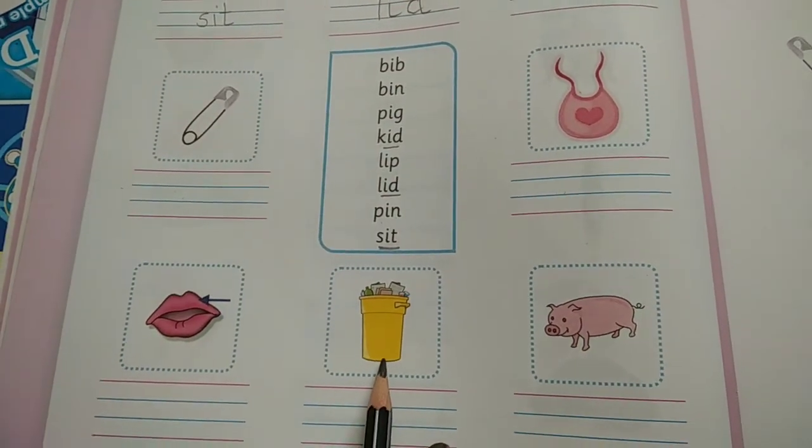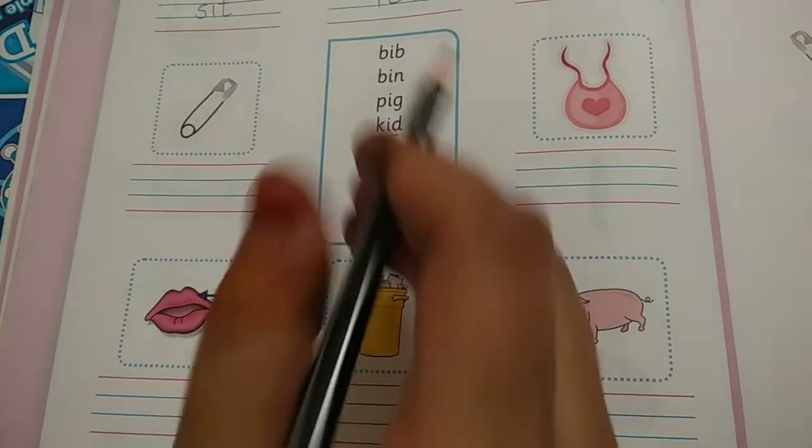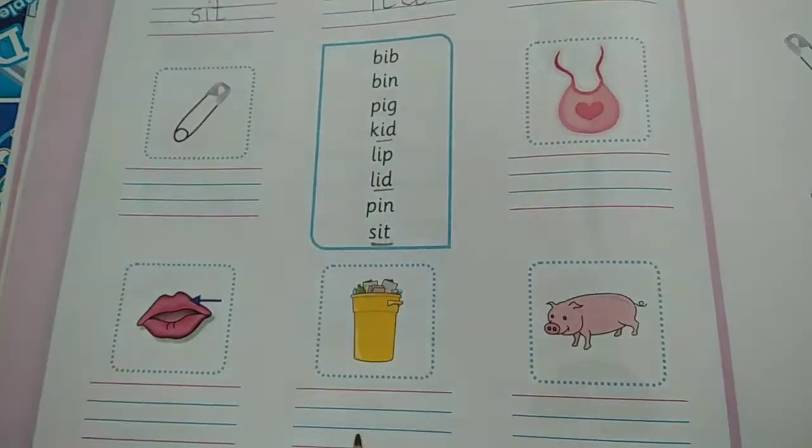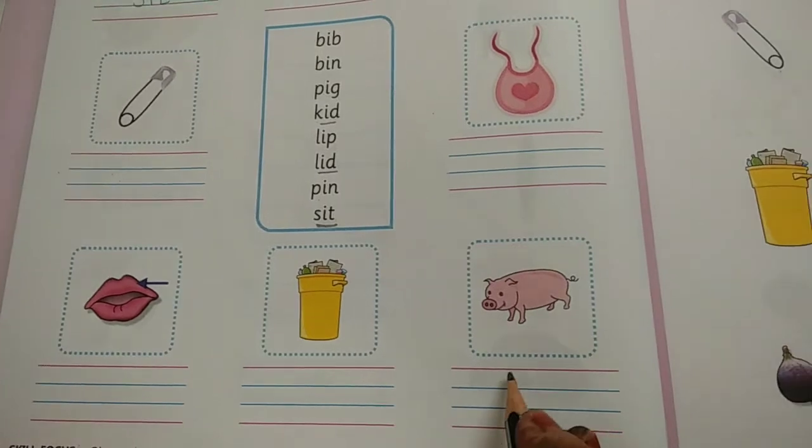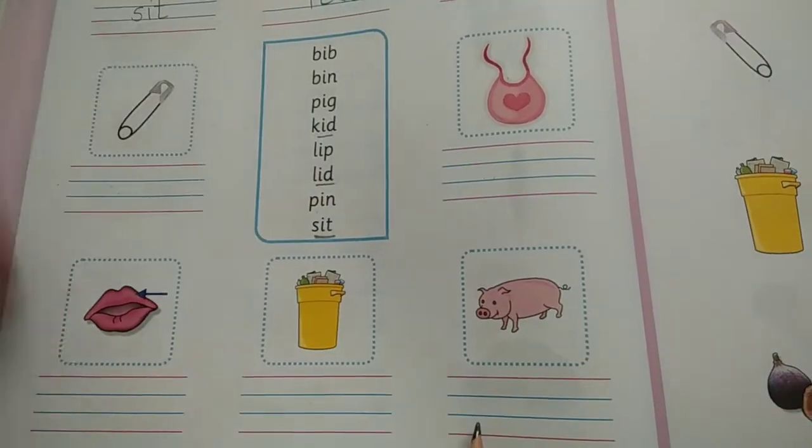Then again this is a bin. B-I-N. So here is B-I-N. Bin. You will write it over here. Now this is pig. P-I-G. Pig. So here is the word. You will write it over here.